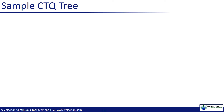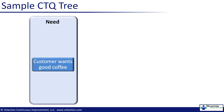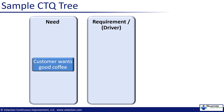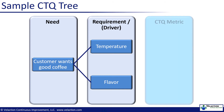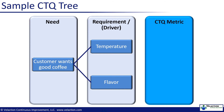Let's take a look at what a CTQ tree could look like. Let's assume we're looking at a customer's need to have a good cup of coffee. We'd want to take a look at a few of the requirements related to that need. In this case, we might focus on flavor and temperature. From those requirements, we would want to identify CTQ metrics that would let us know that we are meeting those requirements.